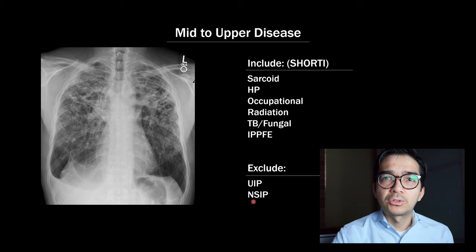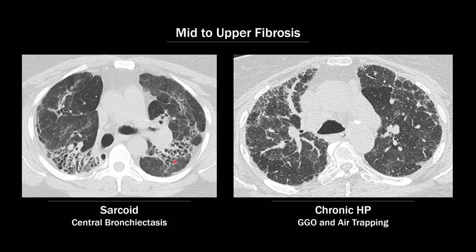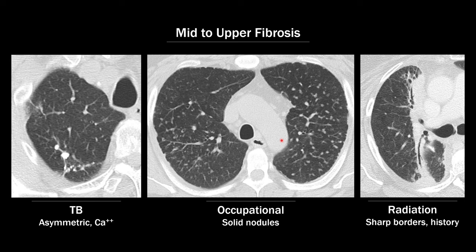Let's take a look at some of those things in the differential. In a patient with fibrotic sarcoid, you'll see bundles of traction bronchiectasis with a mid to upper lung predominance and usually a central distribution. In a patient with chronic hypersensitivity pneumonitis, you'll see fibrosis in a heterogeneous distribution and air trapping on expiratory images. For the other three things in the differential, the patient will usually have a history of old TB, occupational lung disease or exposures, or cancer with prior radiation.